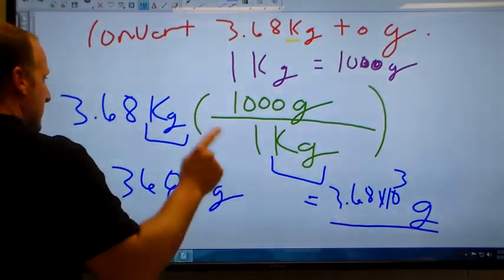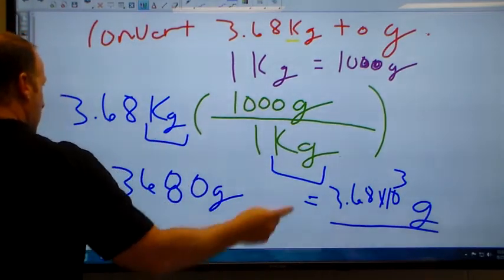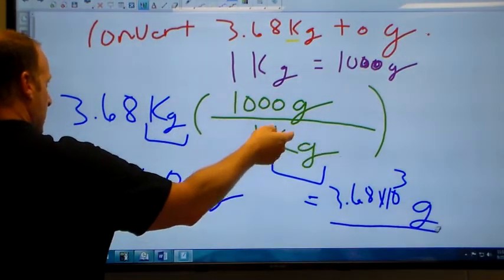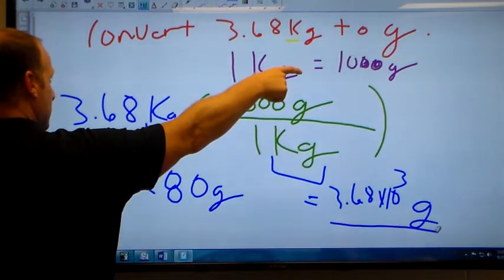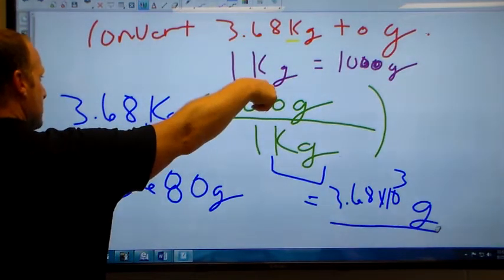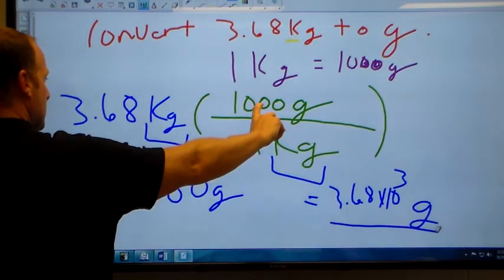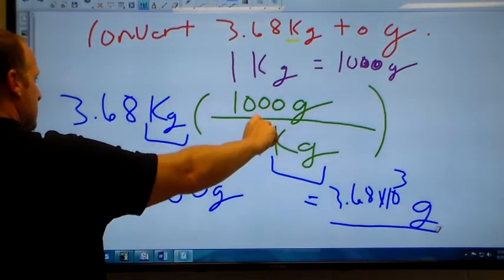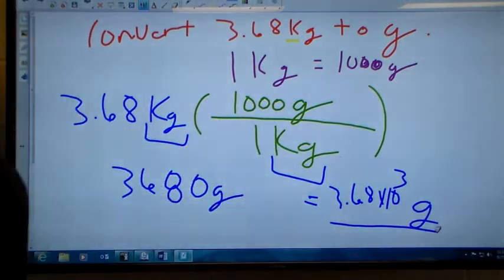Step one: write the equivalent statement. Step two is the conversion factor - what I want goes to the top, what I want to cancel goes to the bottom. Only include these two numbers in the equivalent statement. That number is a measured number, it has no business in here. This is just for the exact numbers that express the relationship between the two units. Multiply it by the top and divide it by the bottom.